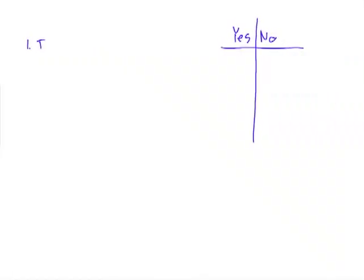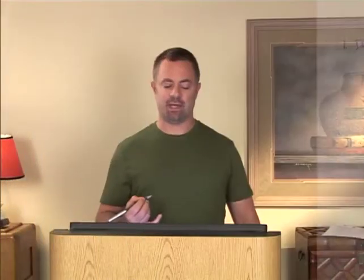So the first special if-then rule is if F, then no G. Well, what do we mean by that? So again, that's if F, that is if F is in yes, then G is in no. If F, then no G. Well, I'm going to demonstrate to you that there are only three possible options for taking down this rule, for applying this rule.